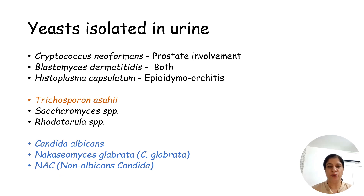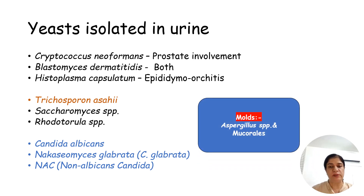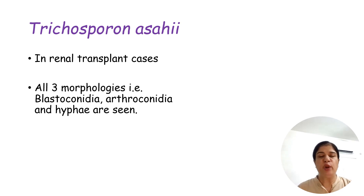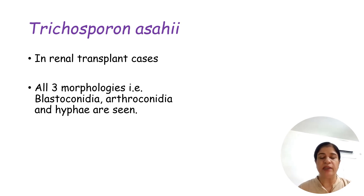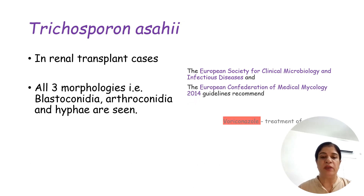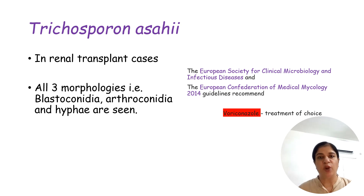Other fungi isolated in urine belong to either endemic mycoses — which involve various portions of the genitourinary system — or opportunistic fungi in severely immunocompromised patients. Even molds like Aspergillus and Mucorales are isolated from both immunocompetent and immunocompromised patients. Trichosporon asahii is seen in renal transplant cases, where all three morphological forms — blastoconidia, arthroconidia, and hyphae — are present simultaneously. ASMID and ECMM recommend voriconazole for its treatment, as it is resistant to other drugs.